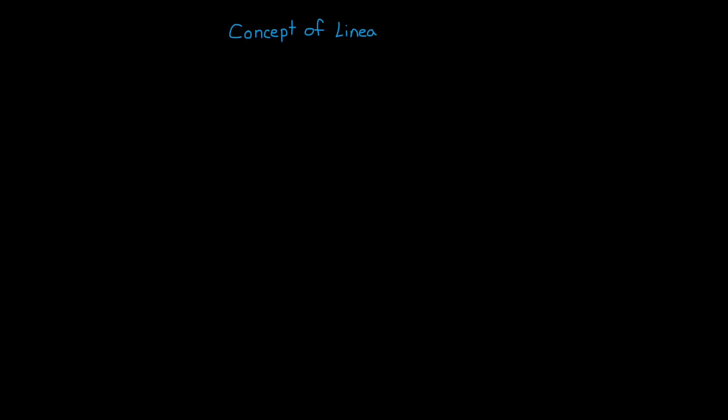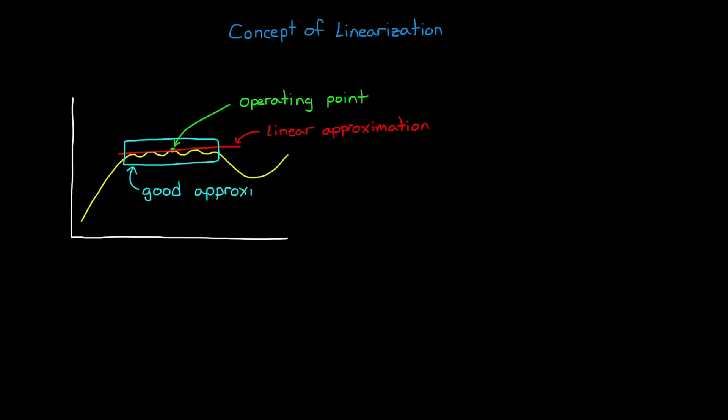From the last video, we have a good understanding of the underlying concept of linearization. At the most basic level, we're looking at the first order partial derivatives of a function at a steady state operating point, and making the assumption that the slope is a good enough approximation of the nonlinear function, as long as we stay close to the operating point.